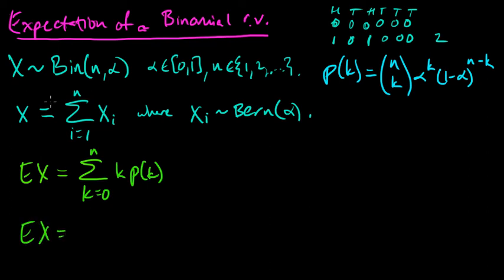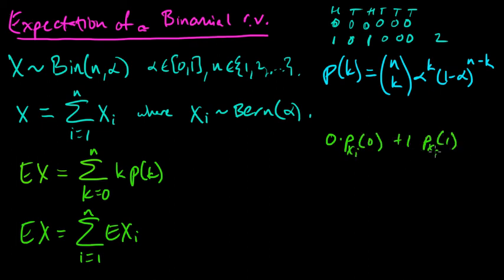Let me go back to our green here. So E[X] using this formula equals the sum, the expected value of the sum. And since expectation is linear, we get the sum of the expectations. We computed in another video that the expected value of a Bernoulli random variable is easy to compute. It's 0 times P(Xi = 0) plus 1 times P(Xi = 1). For Bernoulli, this is (1 minus alpha) and that's alpha. So these cancel and you get alpha. So each of these is alpha.